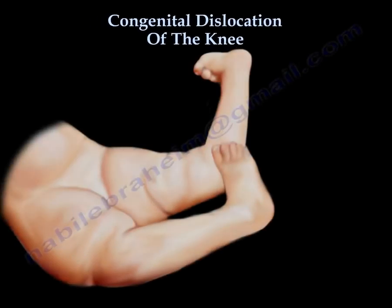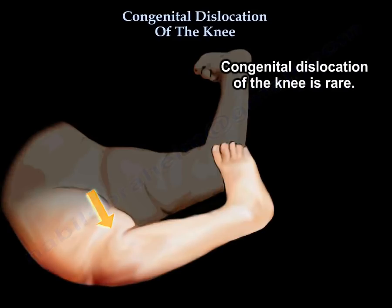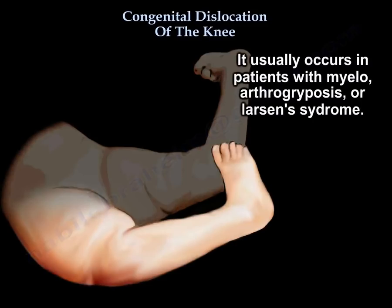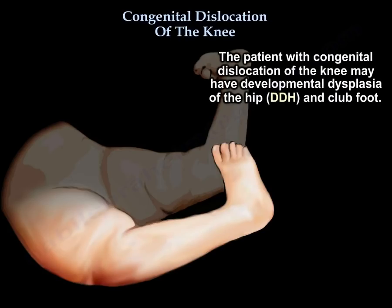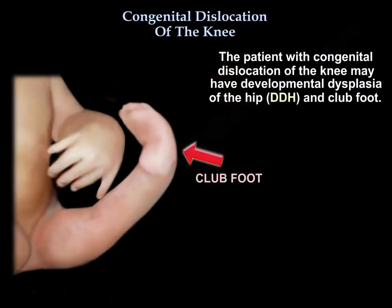Congenital dislocation of the knee is rare. It may occur due to quadriceps contracture. It usually occurs in patients with myelomeningocele, arthrogryposis, or Larson's syndrome. The patient with congenital dislocation of the knee may also have developmental dysplasia of the hip (DDH) and club foot.